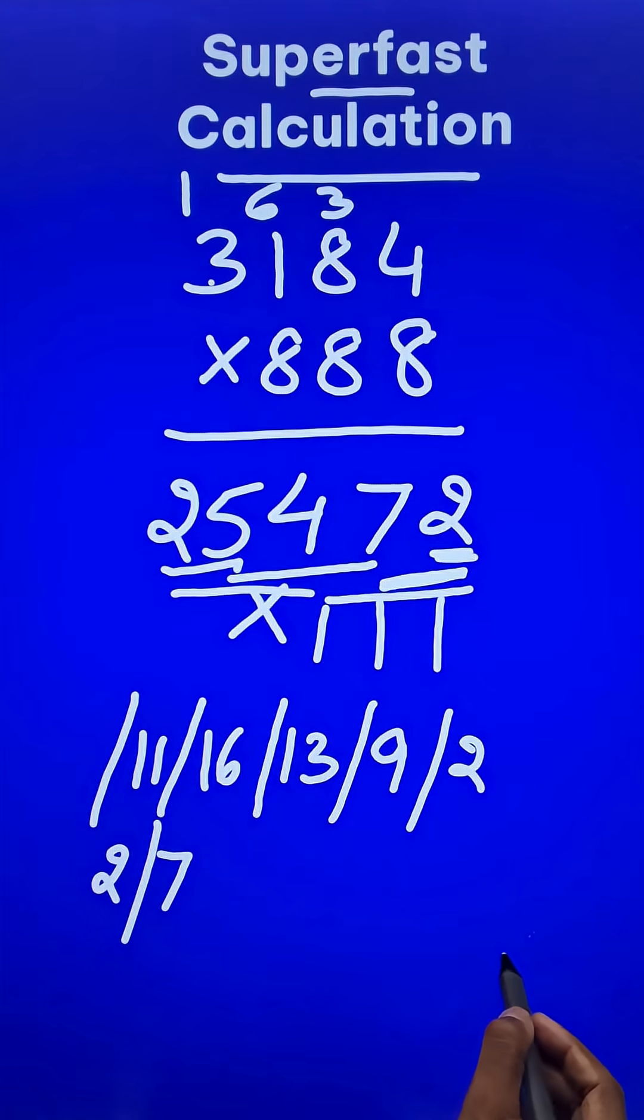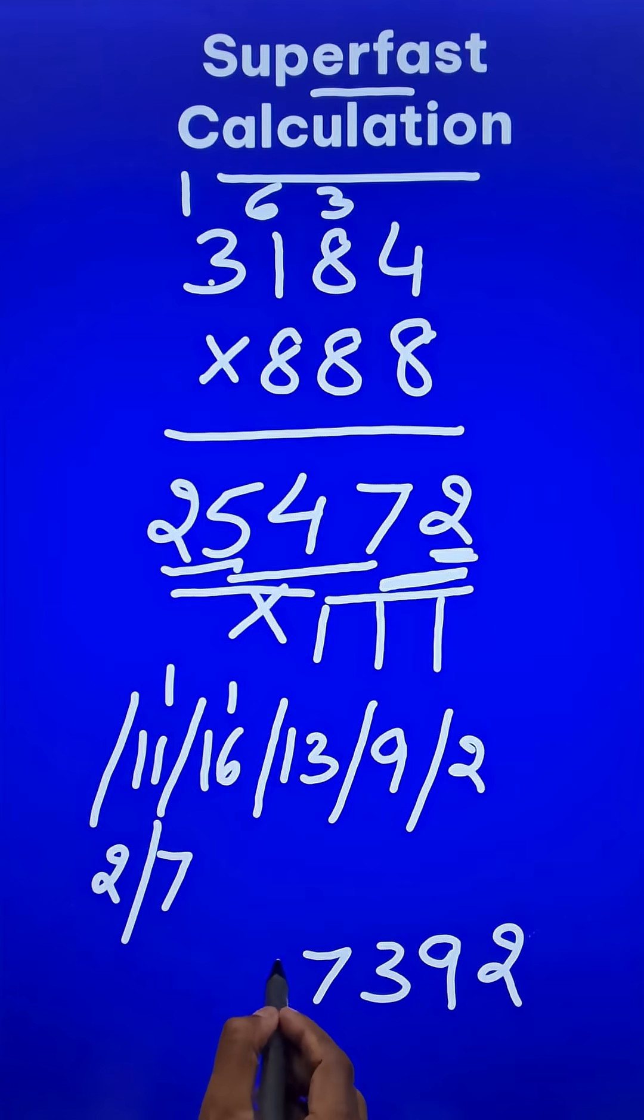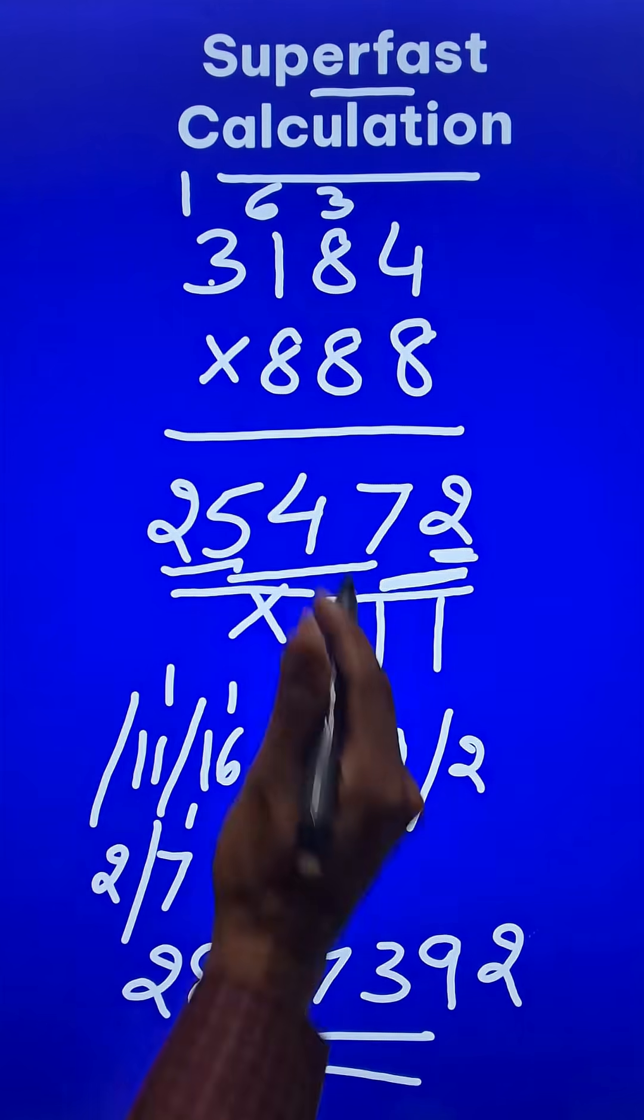Now start writing from the unit digit: 2, 9, 13 means 3 and a 1 carry, 17 means 7 and a 1 carry, 12 means 2 and a 1 carry. So this becomes 8 and then we have the 2. Now pick up the calculators and check your answer.